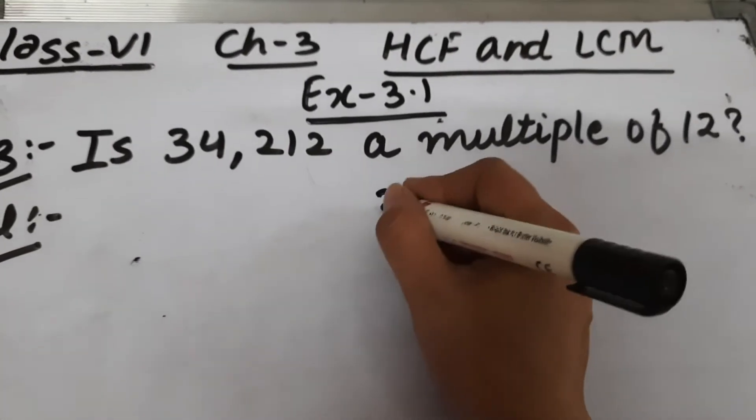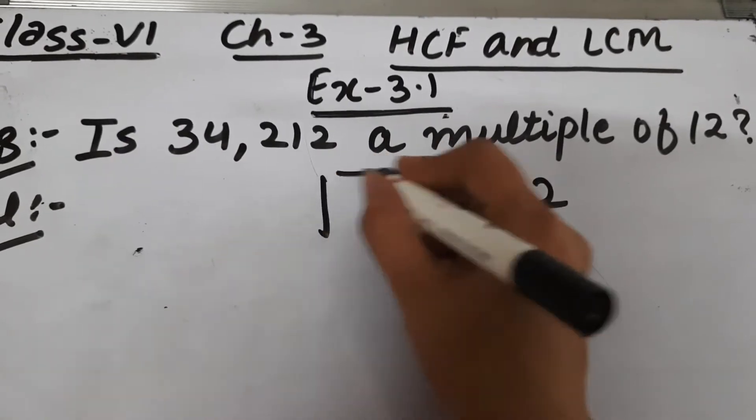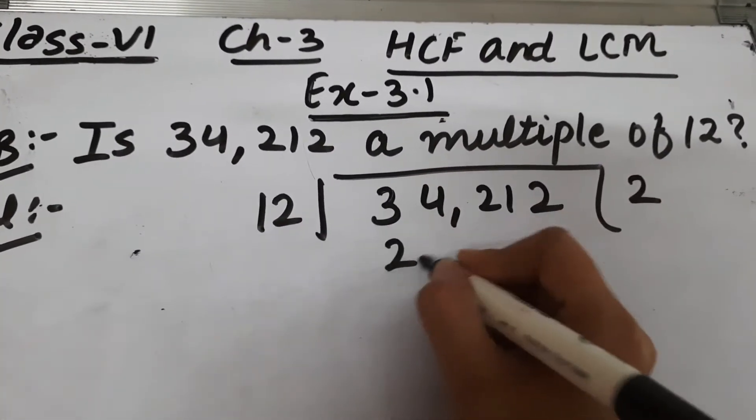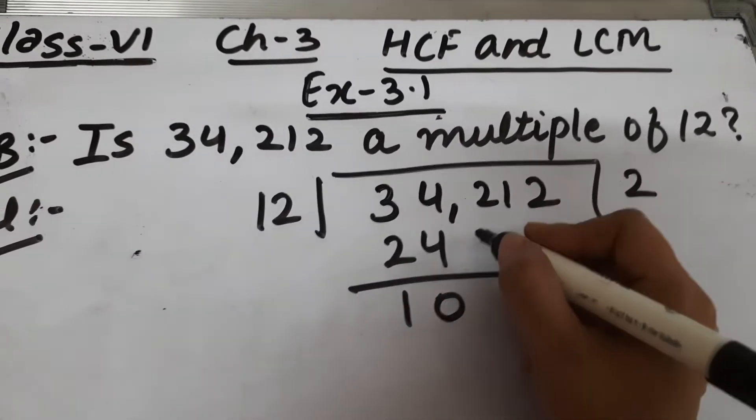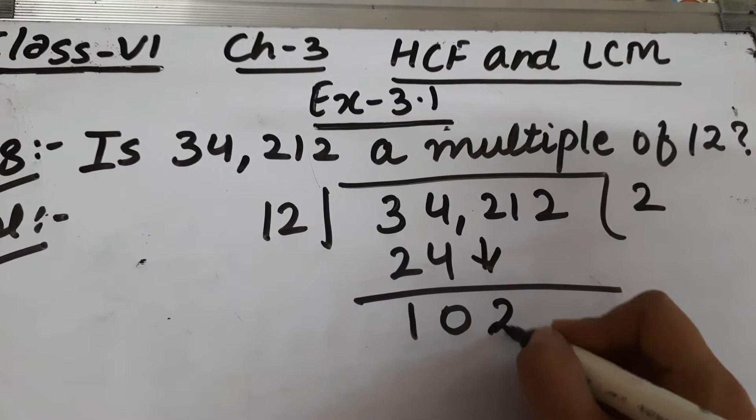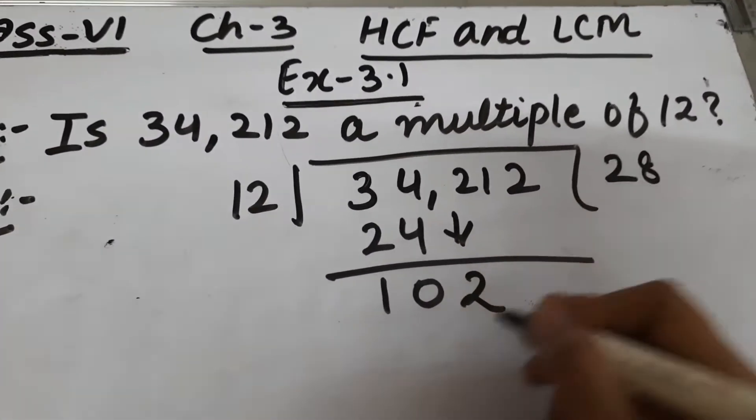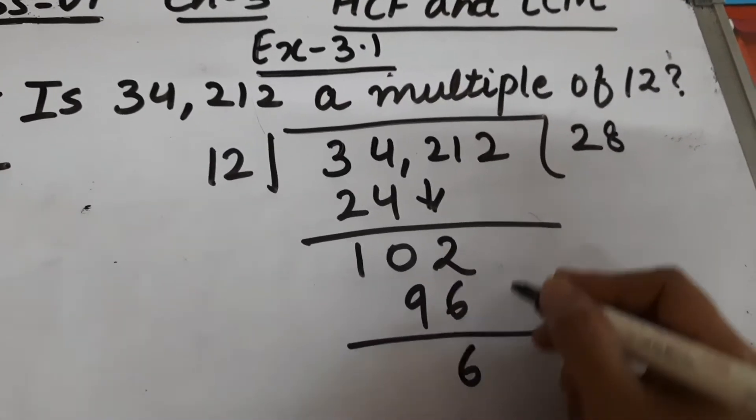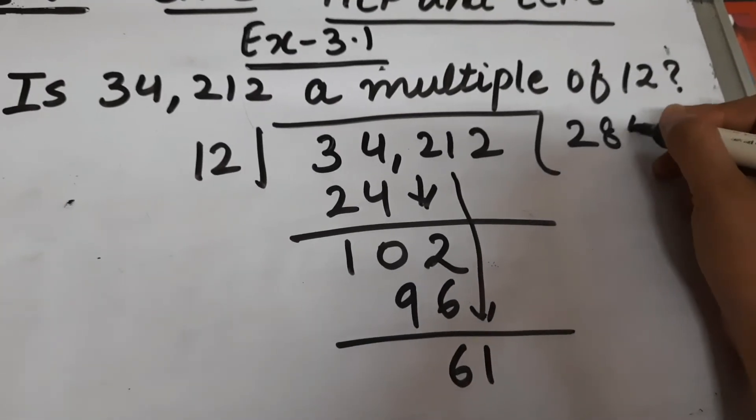So let's start the division. 12 twos are 24, 0, 3 minus 2 is 1, bring this 2 down. 12 eights are 96, 12 minus 6 is 6, bring this 1 down, 12 fives are...